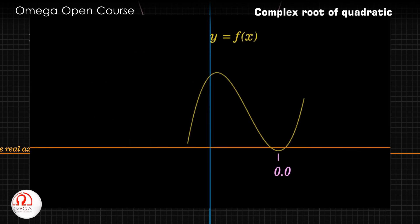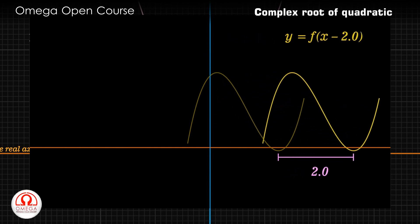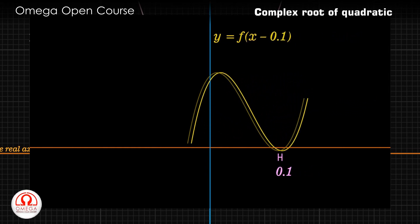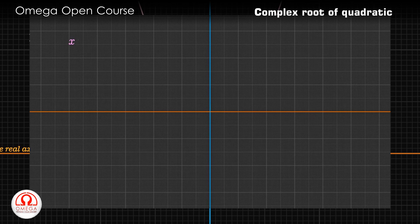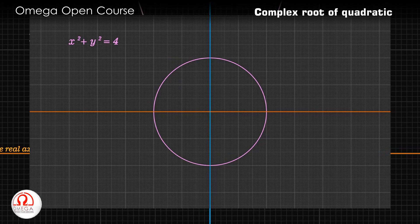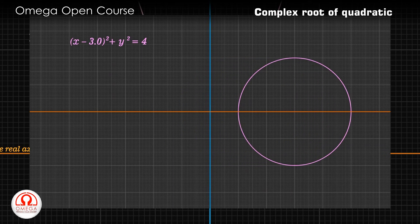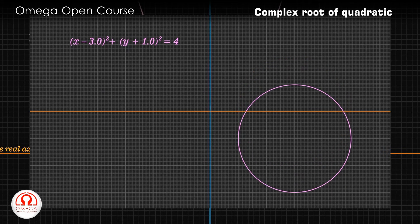You might remember from your coordinate geometry class that whenever you replace x by x − h in the equation of any curve, it does not change the shape of the curve. It simply translates it by distance h in the positive direction of the x-axis when h is positive, and in the other direction if it is negative. For example, x² + y² = 4 represents a circle with radius 2 centered at the origin. If x is replaced by x − 3, the equation x² − 3)² + y² = 4 simply represents that circle translated by 3 units in the positive direction. If you then replace y by y + 1, the circle translates towards the negative y direction by 1 unit without affecting the shape.